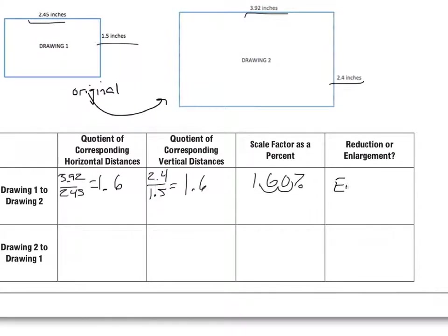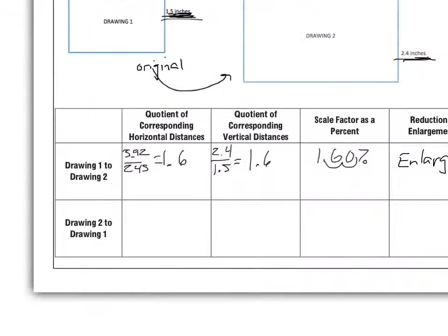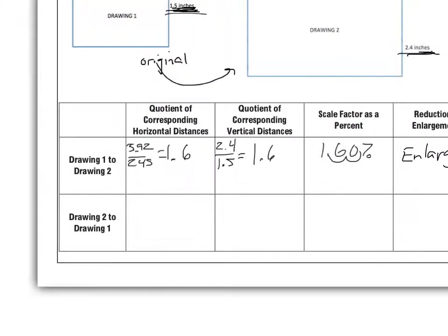One thing we can always double check is that in both of these cases we went from a smaller number to a larger number, and from a smaller number to a larger number. So it is an enlargement by 160%.